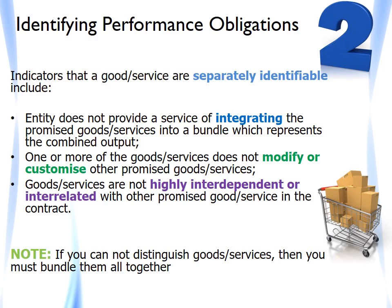Some simple examples illustrating this concept of a distinct performance obligation — let us consider a cell phone contract. Consider your handset and your contract to receive network services. If I walk into a cellular network services provider, call them Vody, to buy a handset, would that handset be distinct? Can I use the handset on its own or together with other resources quite easily available to me? Yes — if it's an iPhone 7, I can connect it to Wi-Fi, or connect to Vody or another provider. Is the handset separately identifiable? Does Vody integrate the phone with something else in the contract? The answer is no. Thus, the handset represents a distinct performance obligation.